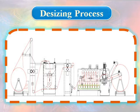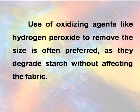It is essential that after the starch has degraded, the acid is neutralized quickly and fully. Otherwise, the fabric will be affected. Use of oxidizing agents like hydrogen peroxide to remove the size is often preferred, as they degrade starch without affecting the fabric.